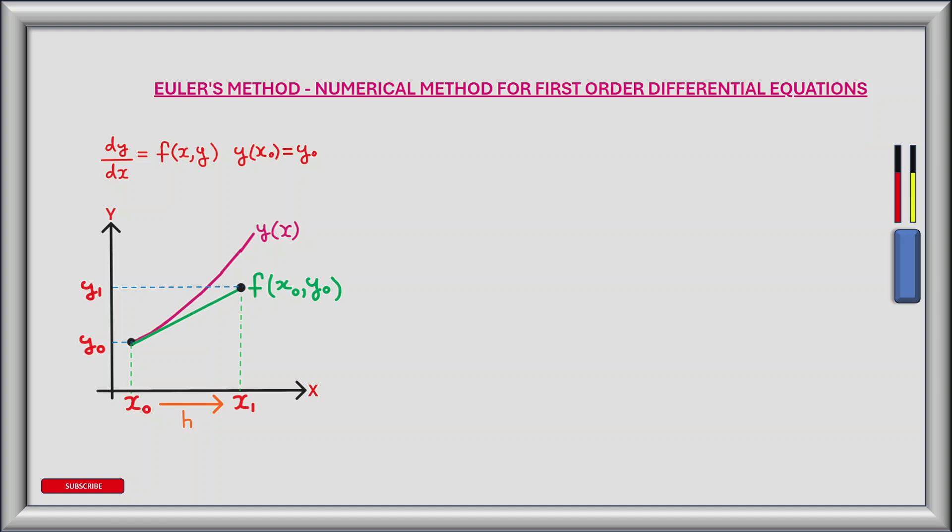The corresponding value of y₁ can be found by drawing a vertical line up until it reaches our tangent and then using what we know about the gradient of straight lines. So let's see how we do this.